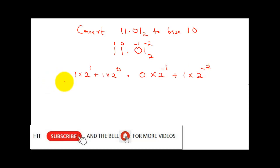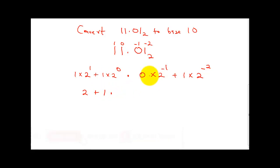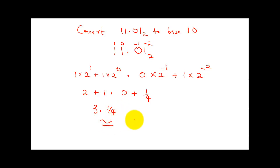To finalize: 1 times 2 raised to power 1 gives us 2, plus 1 times 2 raised to power 0 gives us 1, so that's 2 plus 1. Then 0 times anything gives us 0, plus 1 over 4 equals 0.25. So 2 plus 1 is 3, and 3 plus 0.25 gives us 3.25 base 10.